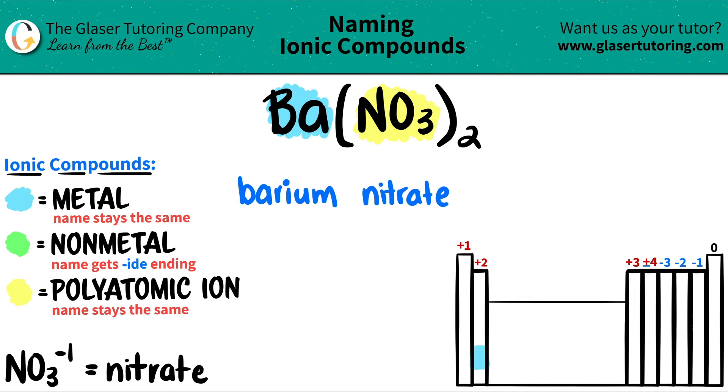So we have barium nitrate. Now we just got to figure out, do I need a Roman numeral or not? Roman numerals are only used for transitional metals. Since barium is in group two, and it's not in this little block over here, I don't need a Roman numeral. So we're done.